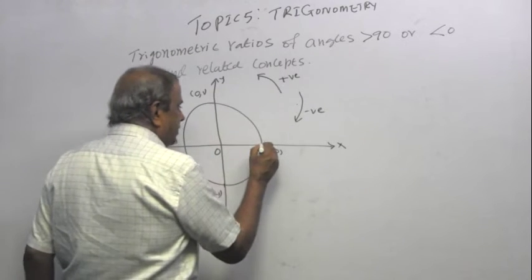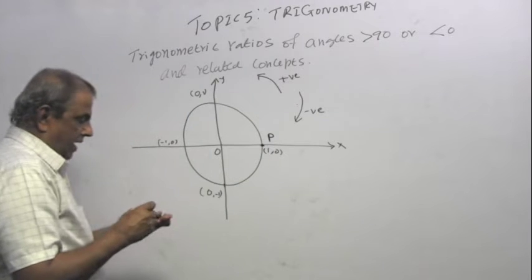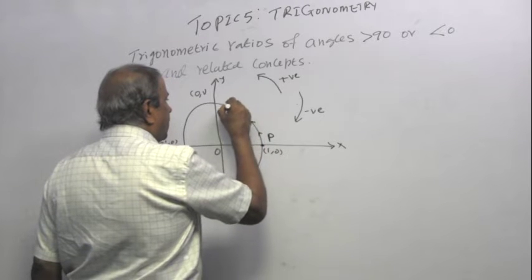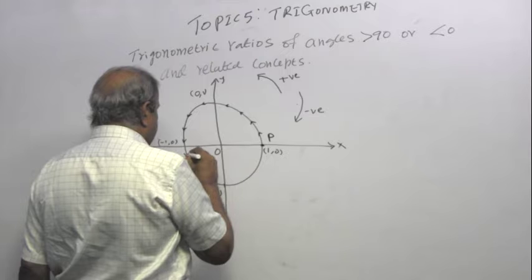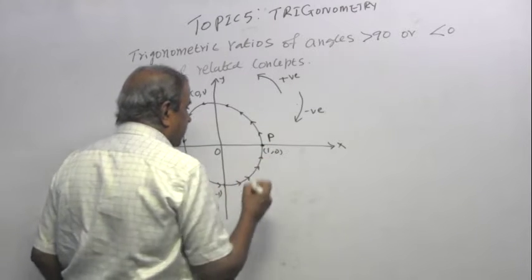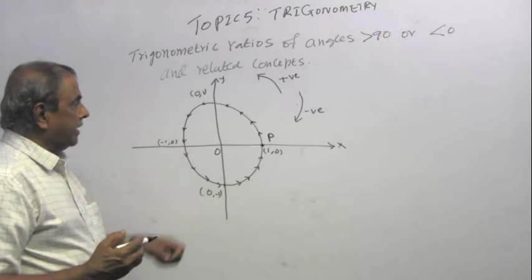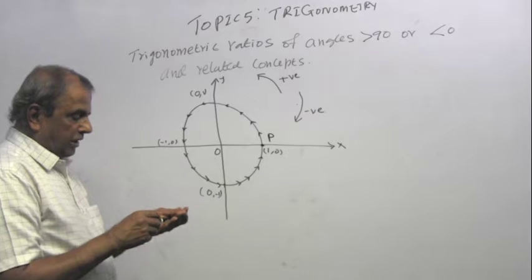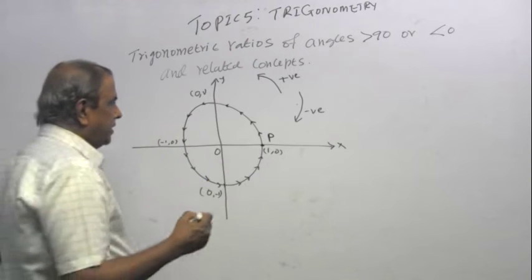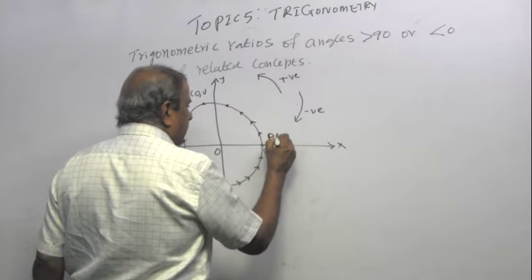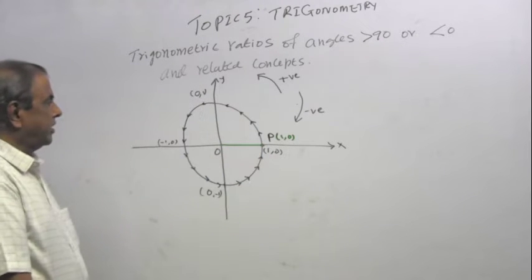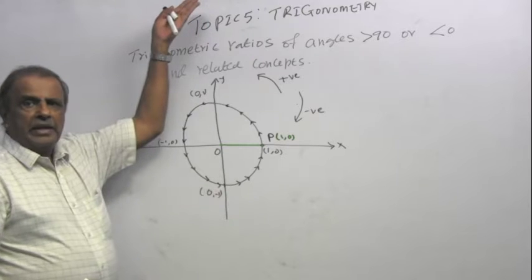Let us assume there is a point P, which keeps moving on the unit circle in an anticlockwise direction. Remember, the radius of this circle is always 1, so wherever point P is, the distance of P from the origin is always 1. I am looking at the coordinates of P, but I do not want to use x and y.